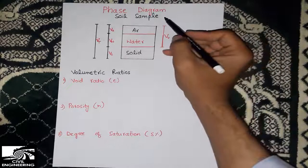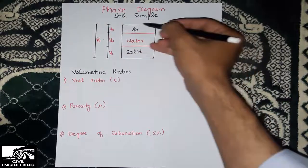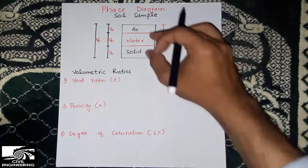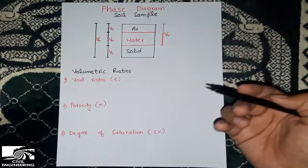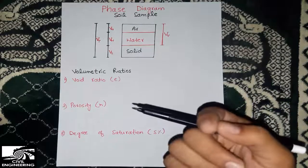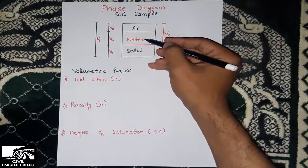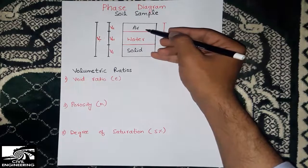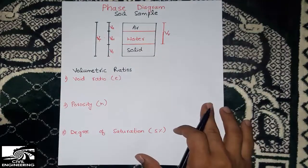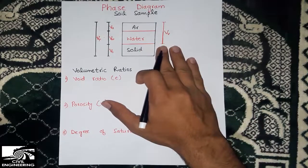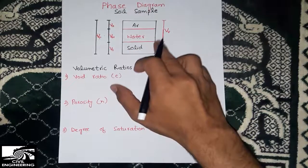So what is the phase diagram? This is the soil sample we see, and this is a detailed view of the soil sample. The diagram shows that there are three phases of the soil sample. The soil comprises three main parts: the solid part, the water part (liquid part), and then there is air — we can see empty spaces represented by air. This is the phase diagram of the soil sample, and everywhere you will see this type of phase diagram.